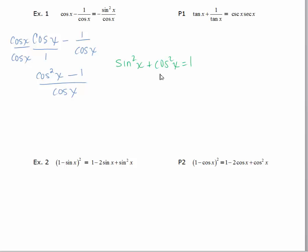Using the Pythagorean identity, in order to get cosine squared x minus one I would have to subtract sine squared x from each side. And I'd also have to subtract one from each side. And so on the left hand side we'd get cosine squared x minus one and on the right hand side we'll get negative sine squared x.